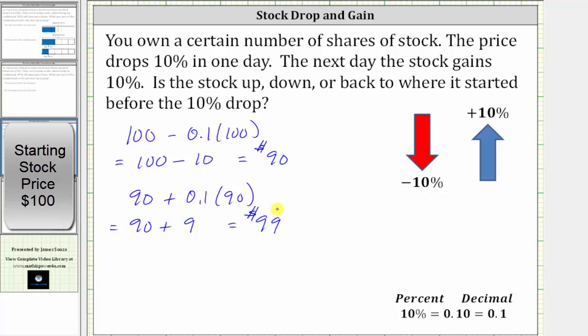To find the percent that it's down, we take the change of $1 and divide by the starting stock price of $100. And one divided by 100 is equal to 0.01,